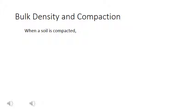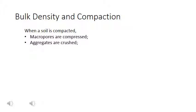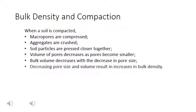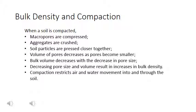In summary, when a soil is compacted, macropores are compressed and aggregates are crushed. Soil particles are pressed closer together, and the volume of pores decreases as pores become smaller. Bulk volume decreases with a decrease in pore size, and decreasing pore size and volume result in increases in bulk density. Compaction restricts air and water movement into and through the soil.